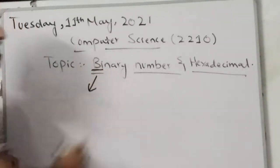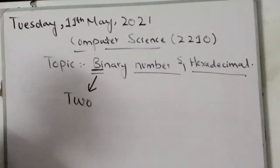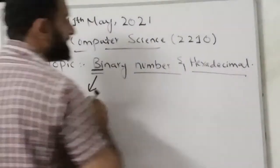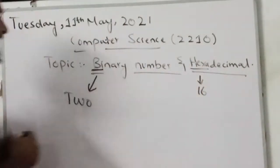Binary means by, by means two. By means what? By means two. And hexadecimal number means 16. It's base 16.